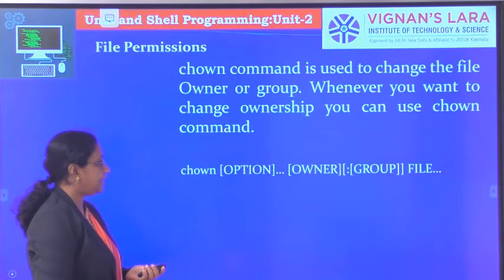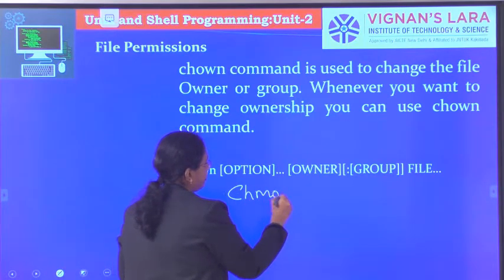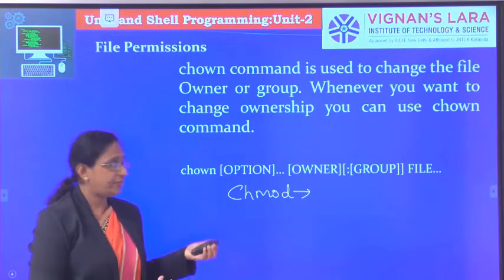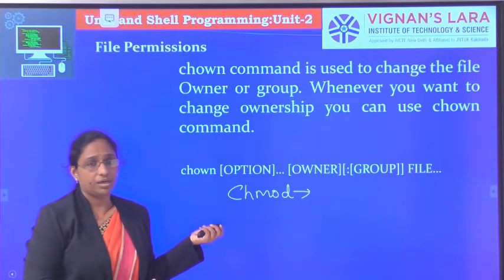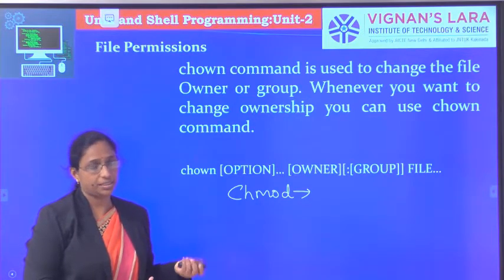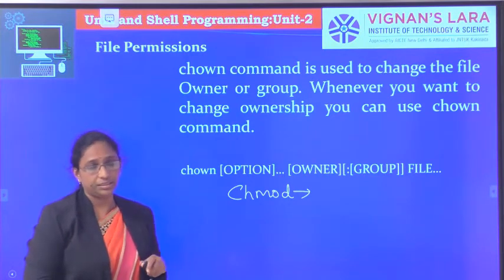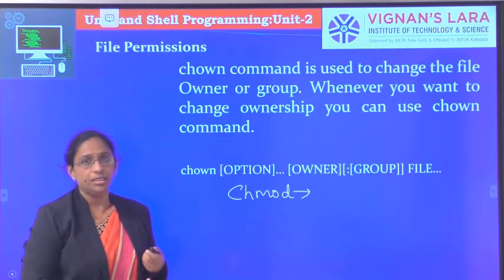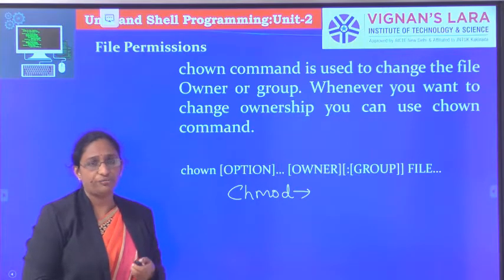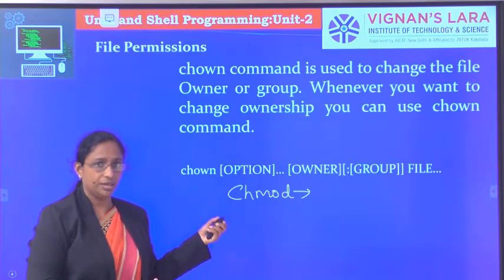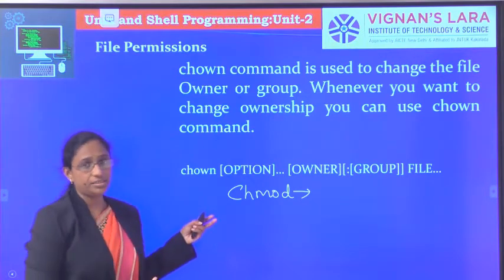That is about chmod, which is used for changing the permissions of a particular file. You have seen two methods: the symbolic mode, using attributes like R, W, X, U, G, O and operators plus, minus, equal to; and the absolute form, using numbers where read is 4, write is 2, and execute is 1. By adding those values you give permissions to users, group, and others.